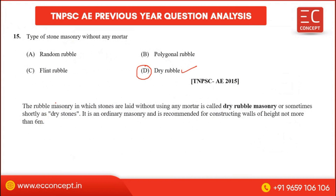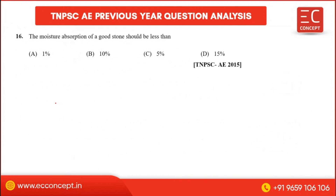Dry rubble masonry is an ordinary form of masonry and is recommended for constructing walls of height not more than 6 meters.